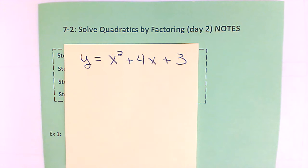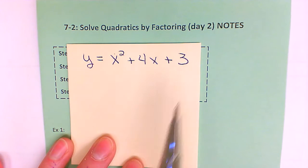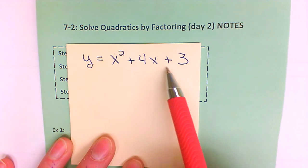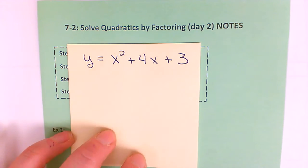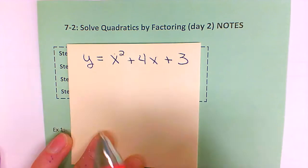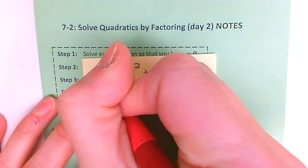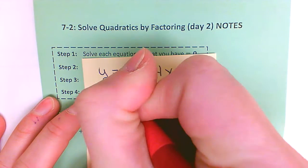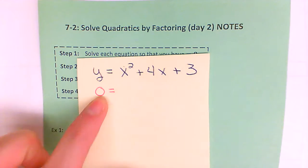Last time we learned that if you have the equation of a quadratic you can find the x-intercepts by factoring the trinomial and then setting them equal to zero. The reason we replace the y value with zero is because anytime you cross the x-axis, y equals zero.